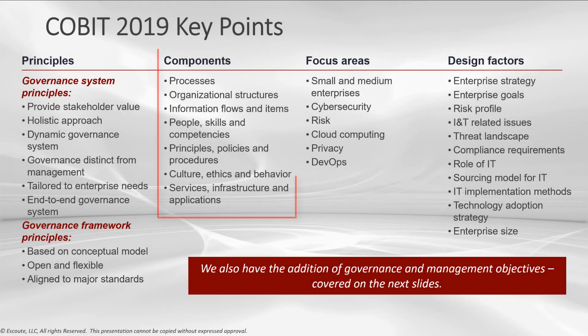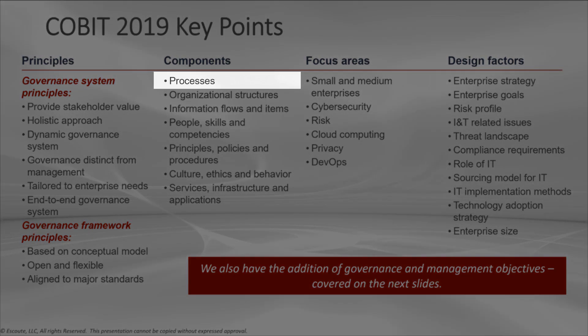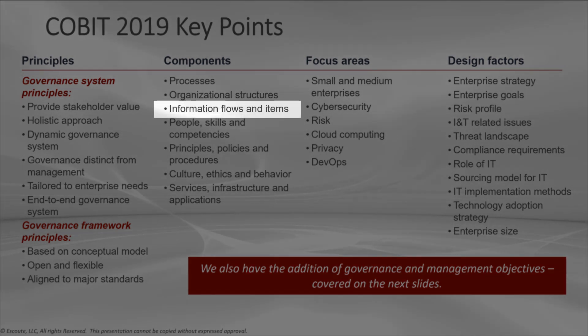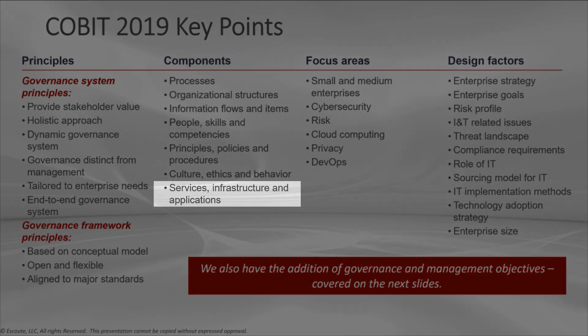One of the great parts of COBIT 2019 are the components — we knew these as enablers back in COBIT 5. The enablers were a list of items, but we really didn't understand how to use those components in a governance system. Today we do. Each component helps describe a governance or management objective, and those components include: processes, organizational structures, information flows and items, people, skills and competencies, principles, policies and procedures, culture, ethics and behavior, and finally, services, infrastructure, and applications.